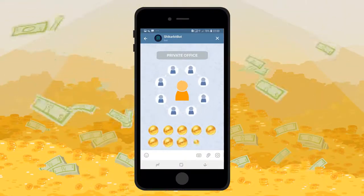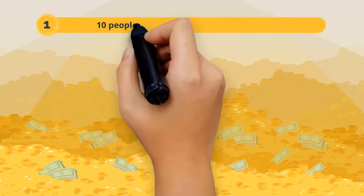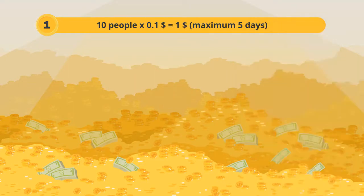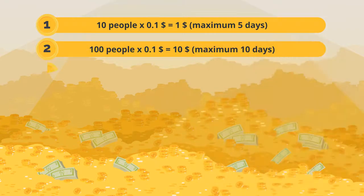for all levels of referrals and the income they bring in real time. Level 1: 10 people times 10 cents equals $1, maximum 5 days. Level 2: 100 people times 10 cents equals $10, maximum 10 days.